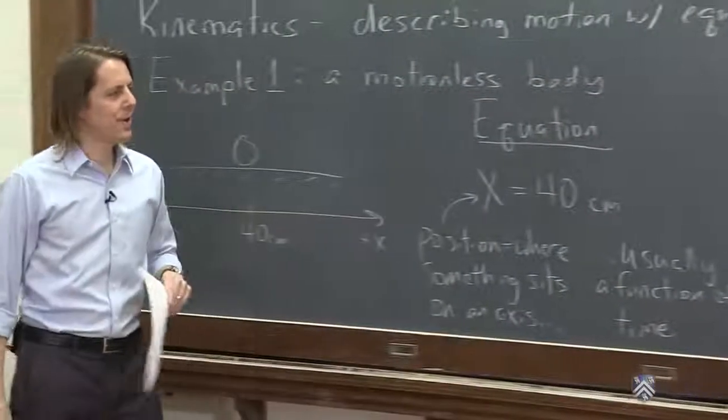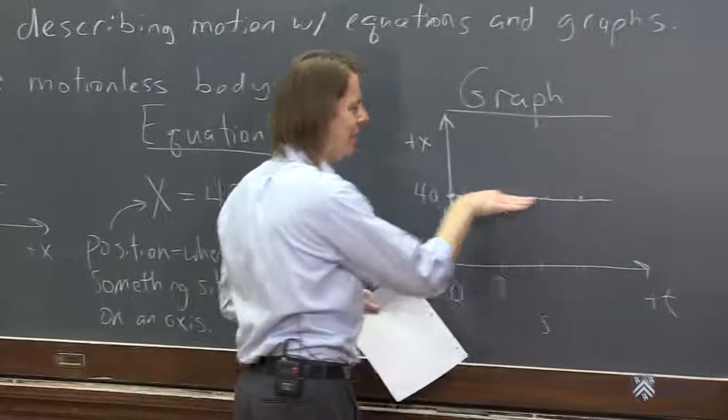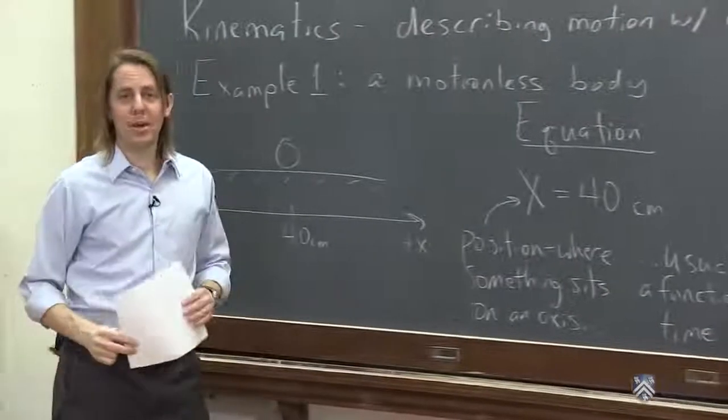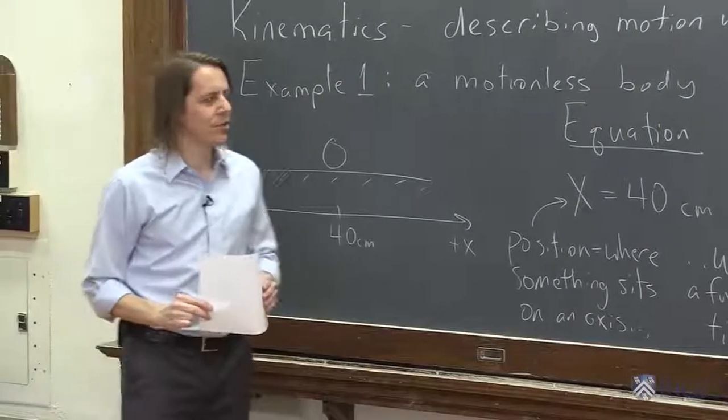So that's the simplest kinematics plot you can get. Something that is just not moving. It's just a flat line, because the position didn't change versus time. It's as far down as we can go. It'll get more complicated than that as we go. But that's the beginning. That's how we get started in kinematics.